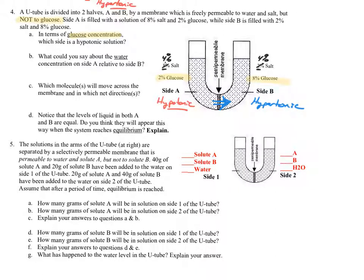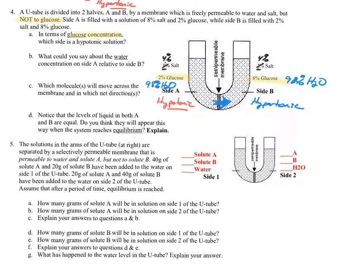Water is going to move from its high to its low — from 98% to 92%. Or you can think of it as: glucose could move if it could, it would move towards the left, but it can't, so water moves in the opposite direction. So there are three ways to figure out the direction water moves, and all lead to the same answer.